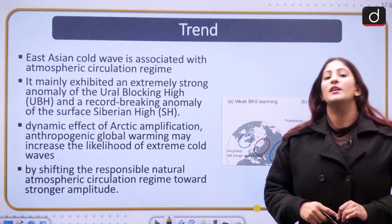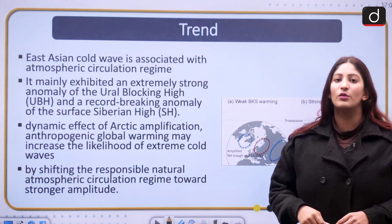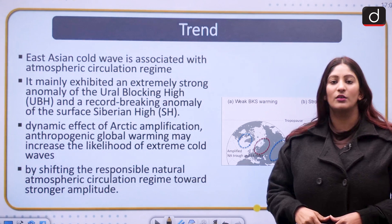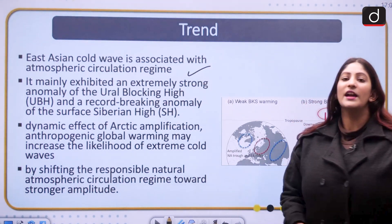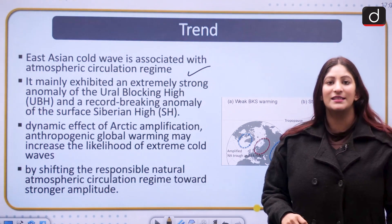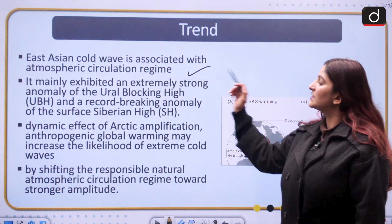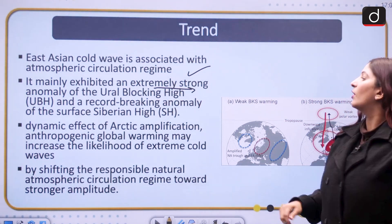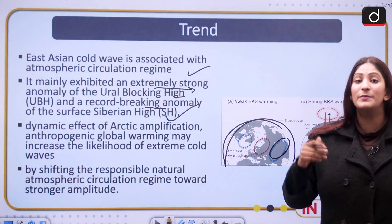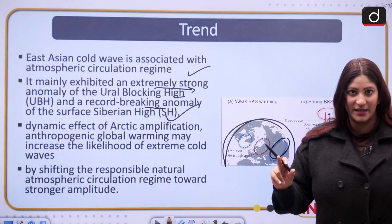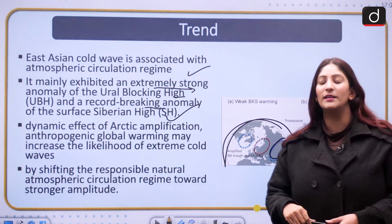Another important trend registered in East Asia: global warming theories suggest that instances of cold wave may reduce, but the 2021 cold wave in the US suggests this is just a theory. Cold waves in East Asia are associated with the atmospheric circulation regime of neighboring regions. For example, they are mainly exhibited through an extremely strong anomaly of the Ural blocking high and a record-breaking anomaly of the surface Siberian high. The Ural blocking is a large, expansive and persistent anti-cyclonic system developed near the Ural mountains.